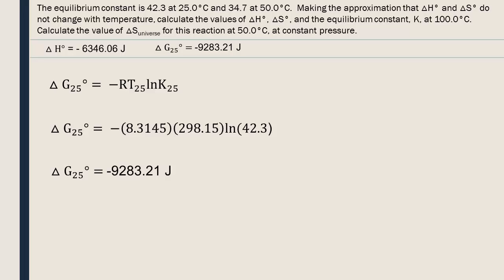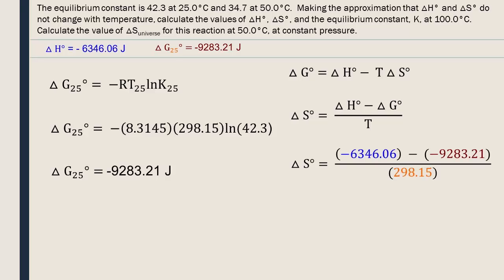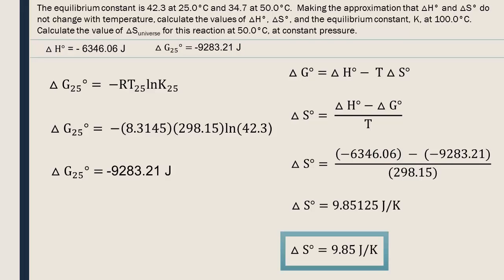Now that we know delta G's value, we can find delta S with the free enthalpy equation. We rearrange for standard delta S. We calculated delta G at 25 degrees Celsius, so we have to use 25 degrees Celsius — but in kelvins — as our temperature here. We could have also calculated delta G at 50 degrees Celsius and used that temperature instead. We insert the values for standard delta H and standard delta G that we already calculated, divide by the corresponding temperature, and round the final answer to three significant digits. We will keep an answer with multiple significant digits for future calculations.